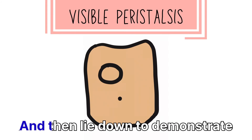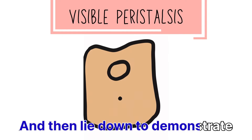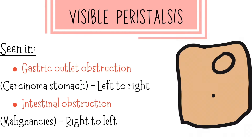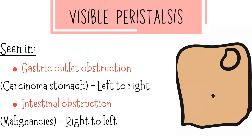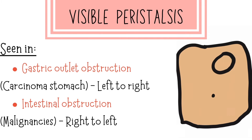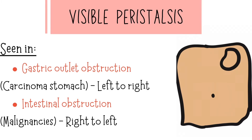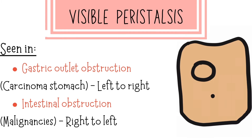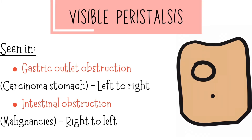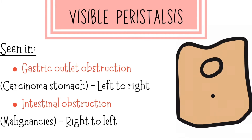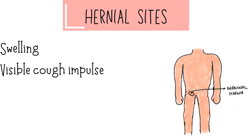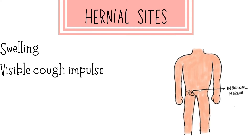Then we have to observe for visible peristalsis. Ask the patient to lie down and observe from the side — the patient will feel it as ball-rolling movements in the abdomen. It is seen in gastric outlet obstruction and intestinal obstruction. In gastric outlet obstruction, as in carcinoma of the stomach, it is seen moving from left to right, whereas in intestinal obstruction due to malignancies of the small intestine, it moves from right to left.